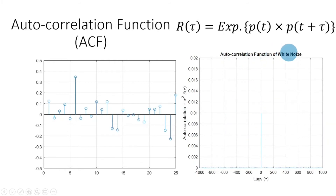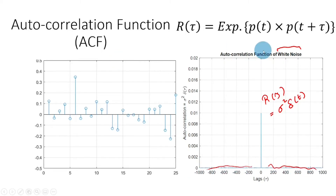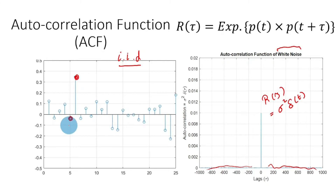An important property of white noise is that the autocorrelation function only exists when the lag or time shift tau equals zero — at which point P(t) multiplied by P(t) and expectation taken gives the variance of the distribution. So for white noise, the autocorrelation function equals sigma squared times delta(tau), and is zero for all other lags. You will also encounter the terminology 'iid' — independent and identically distributed — meaning each outcome is independent of others, but all follow the same Gaussian distribution.